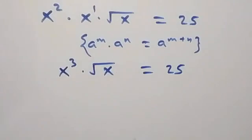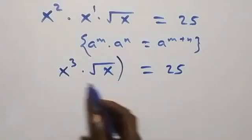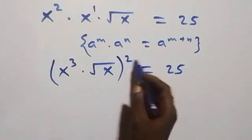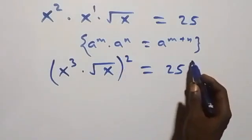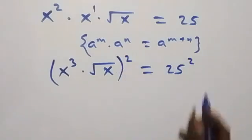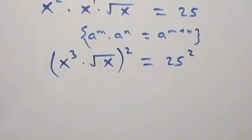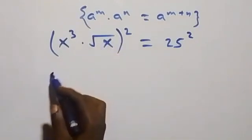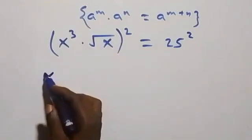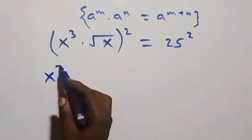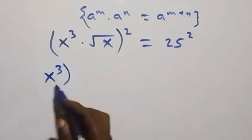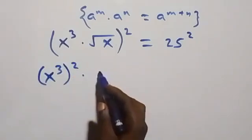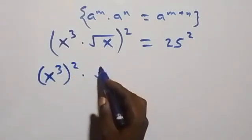The next step: we square both sides again. The square affects x raised to power 3, so we have x raised to power 3, squared, then times root x, also squared.